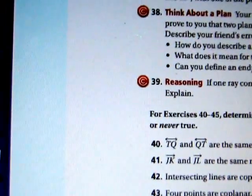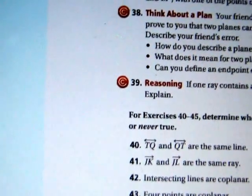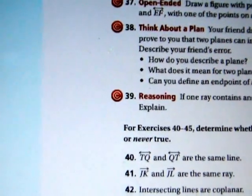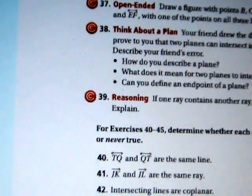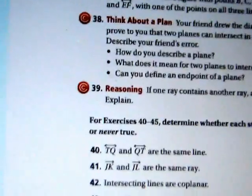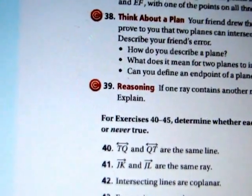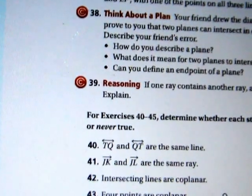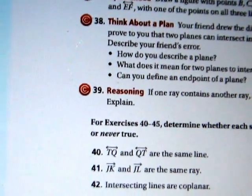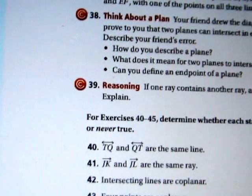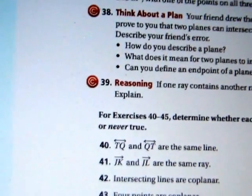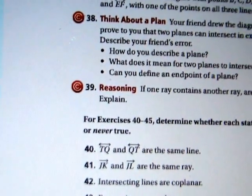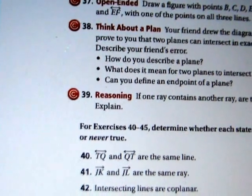43. Four points are coplanar. That's pretty easy to prove it's not true. It's sometimes true, I guess. It's easy to draw four points on a piece of paper. And if you can draw them on a piece of paper, then they are coplanar. But you can also draw three dots in a triangle shape and another dot up above the paper. And that would prove that they weren't all on the same plane. So four points are coplanar is a sometimes true statement. Not always.